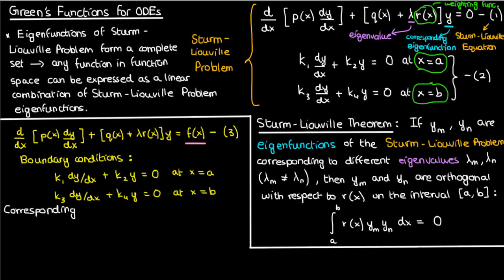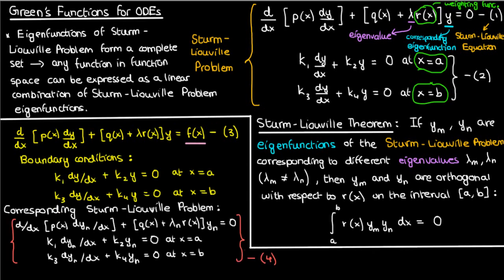It's just like the Sturm-Liouville equation except this time the ODE is non-homogeneous, with a function f on the right. The Sturm-Liouville problem, which corresponds to this non-homogeneous differential equation, is given in equation 4. It's a very similar ODE with the exact same boundary conditions, but the only difference is that now we've gotten rid of f, so we've made the problem a homogeneous ODE problem.